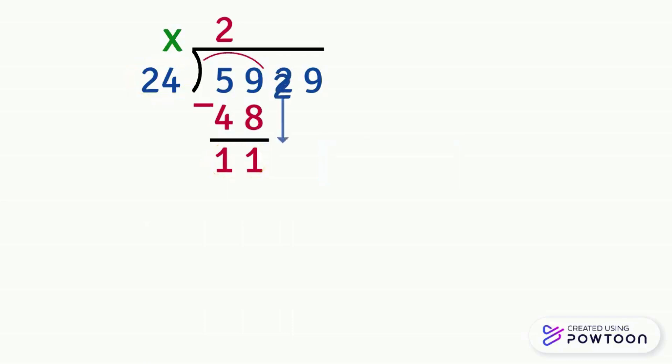Now we will bring down the number 2 and put it next to 1. So we will have 112 and we have to divide 112 by 24. Similarly we will hide the number 4 in the number 24 and number 2 in the number 112 and we will ask the question: 2 times what gives us 11 or a number very close to 11? It is 2 times 5.